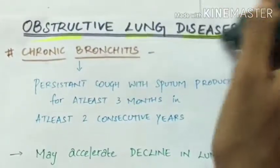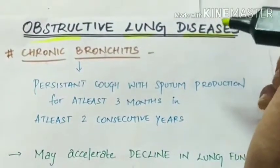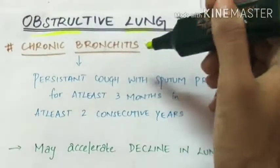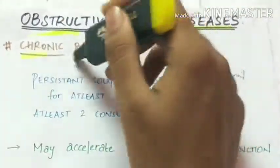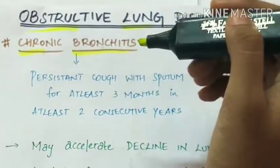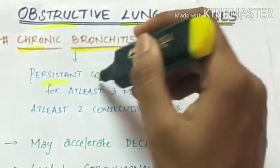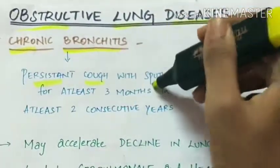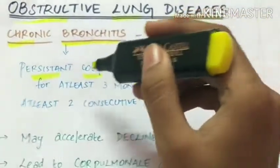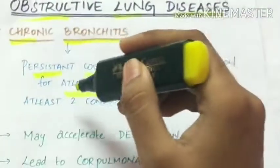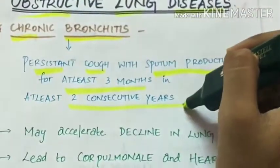Obstructive lung diseases. Let's see about the other obstructive lung diseases. First is chronic bronchitis. Here there is persistent cough with sputum production for at least three months in at least two consecutive years.